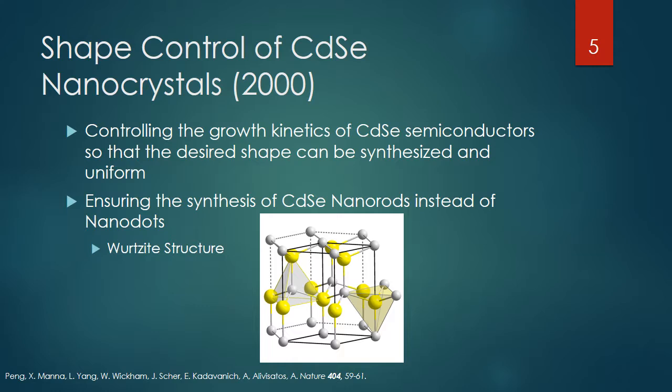The wurtzite structure is somewhat unique. It has a hexagonal shape on top and rectangles basically coming down the sides. In order to get a nanodot, you basically want all three axes to grow together so the hexagon gets bigger and bigger, giving you a very circular shape because all the axes are growing together.